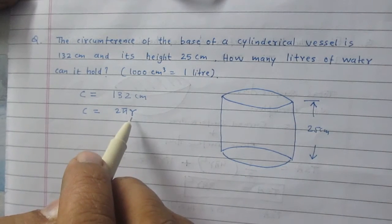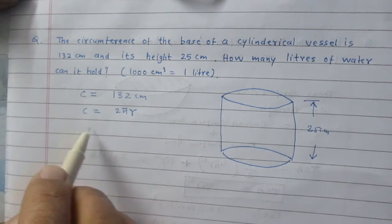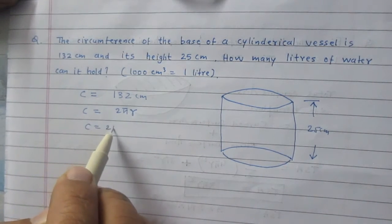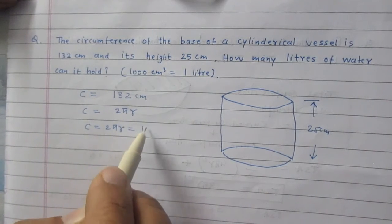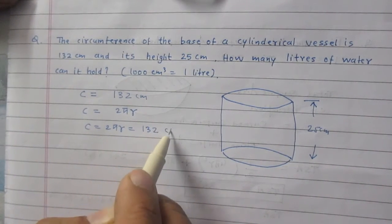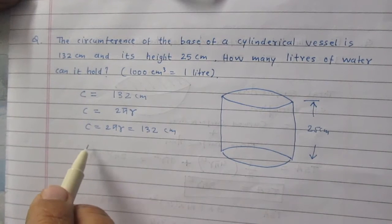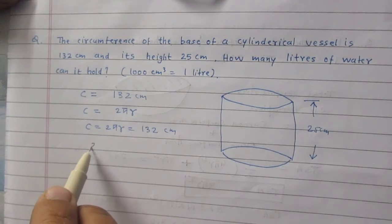We don't know anything about r, so we are to find the value of r using this relation. Circumference is equal to 2πr which is 132 cm according to the question. The value of π is 22/7.